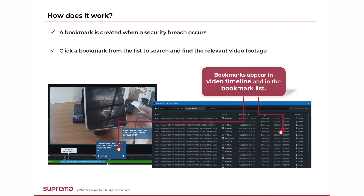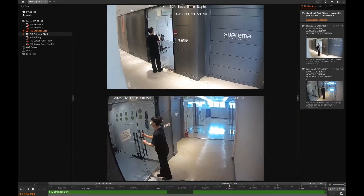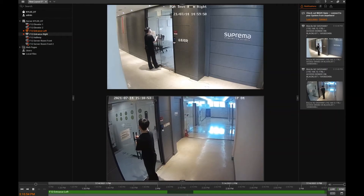Bookmarks in the VMS are video clips of a configurable duration. They are used to reference something that occurs and create an easy way to search and find relevant videos. Operators can configure specific events from Biostar 2 to create a video clip bookmark in the VMS. This can be used to aid in easily retrieving video for important events, such as when someone accesses a sensitive area or when a security breach occurs such as when a door is forced open.